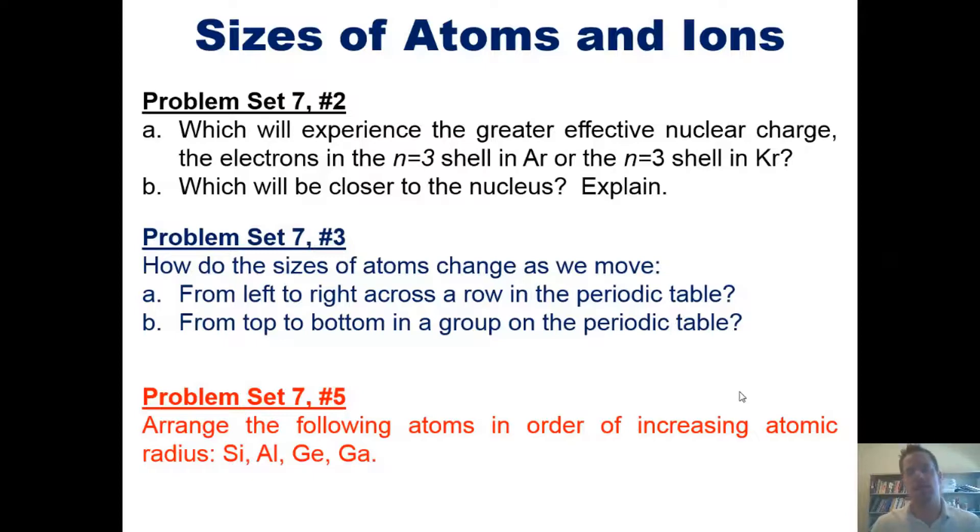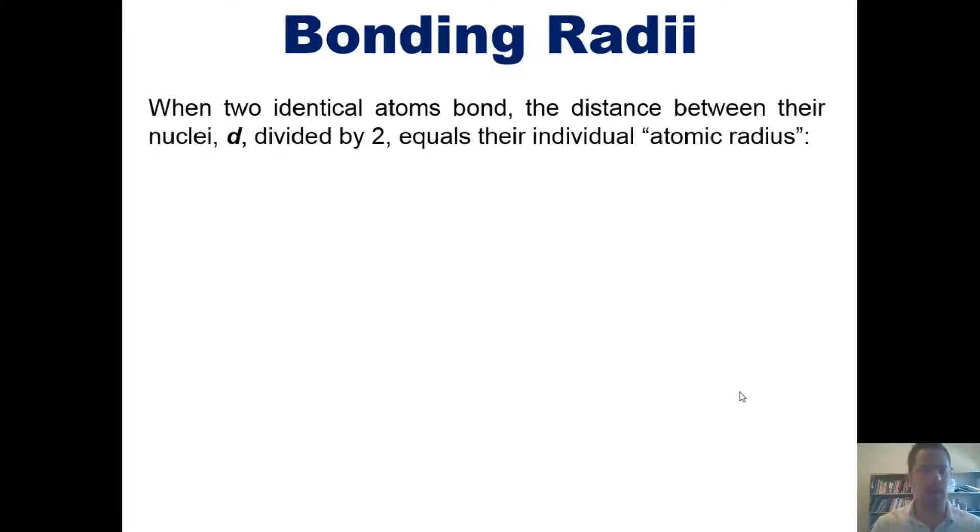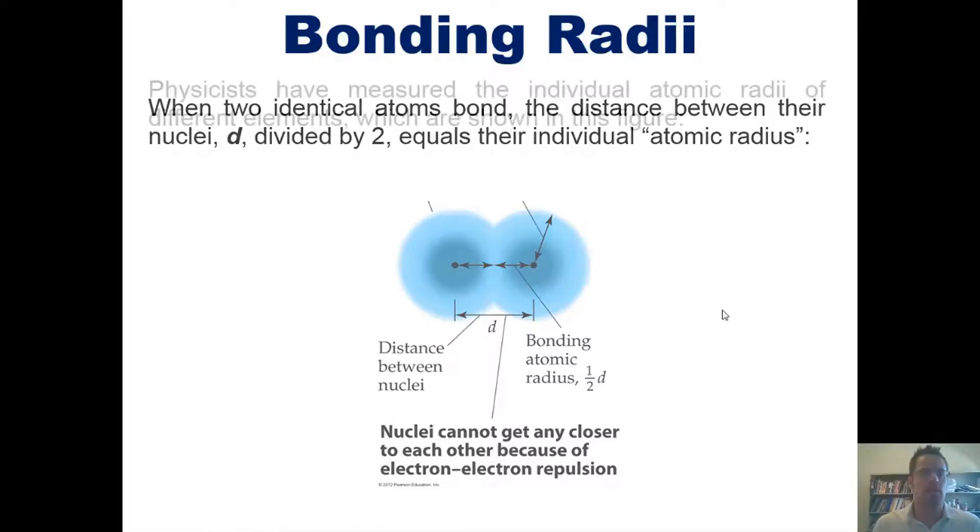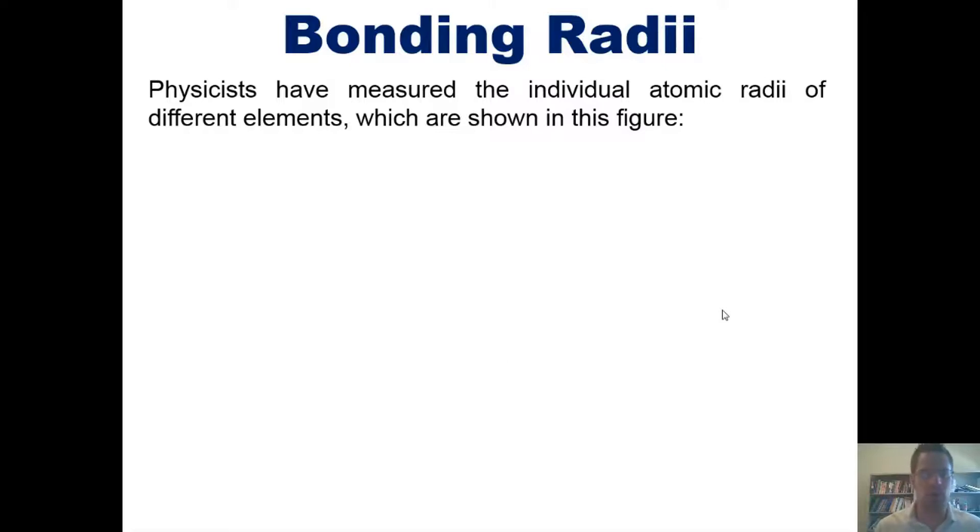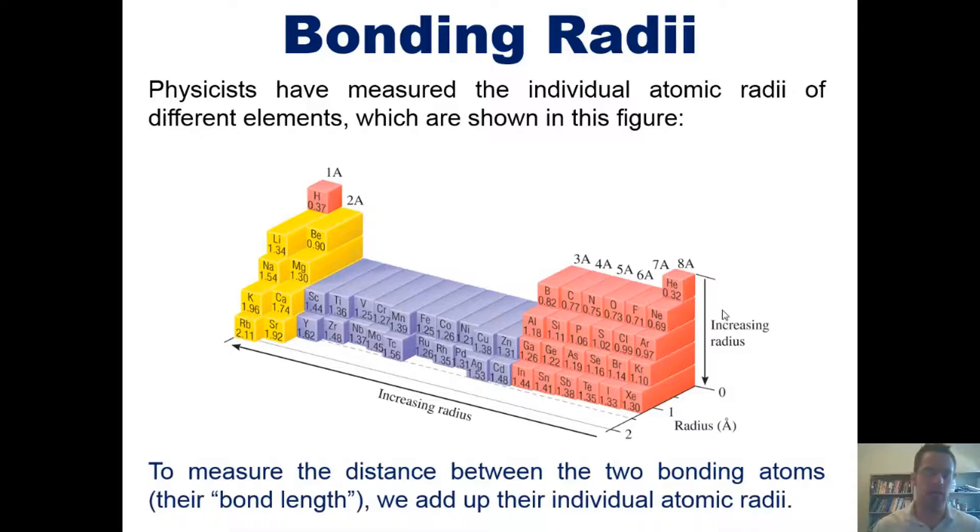That takes us to our next subject: that of bonding radii. When two identical atoms bond, as seen in this cute little picture, the distance between their individual nuclei, d, divided by 2, equals their individual atomic radius. Physicists have measured the individual atomic radii of different elements, which are shown in this figure, which I happen to have shown you before. Once again, the numbers shown here represent the radii from each nucleus of each of these individual elements to the outermost extent of their largest orbital.